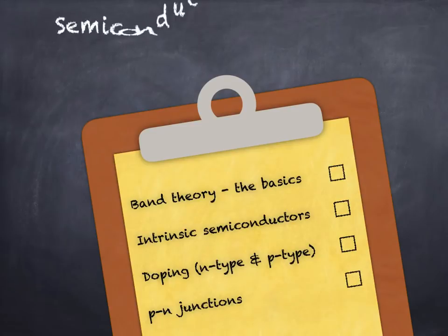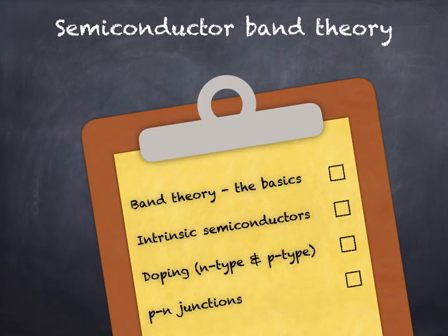Hi there. This is the first in a series of three videos on semiconductors. In this first video I'll give a simple explanation of semiconductor band theory. We look at intrinsic semiconductors, then move on to doping, in order to form n-type and p-type semiconducting materials.